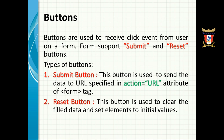First of all, we will discuss about the purpose of using buttons on a form. Buttons are used to receive click events from the user on a form. A form has two types of buttons basically: one is the submit button and one is the reset button. The submit button is used to send the data to the web server or to the URL defined inside the action attribute of the form. When we click on the submit button, the data filled into our form fields will be sent to the location assigned to the action attribute of the form.